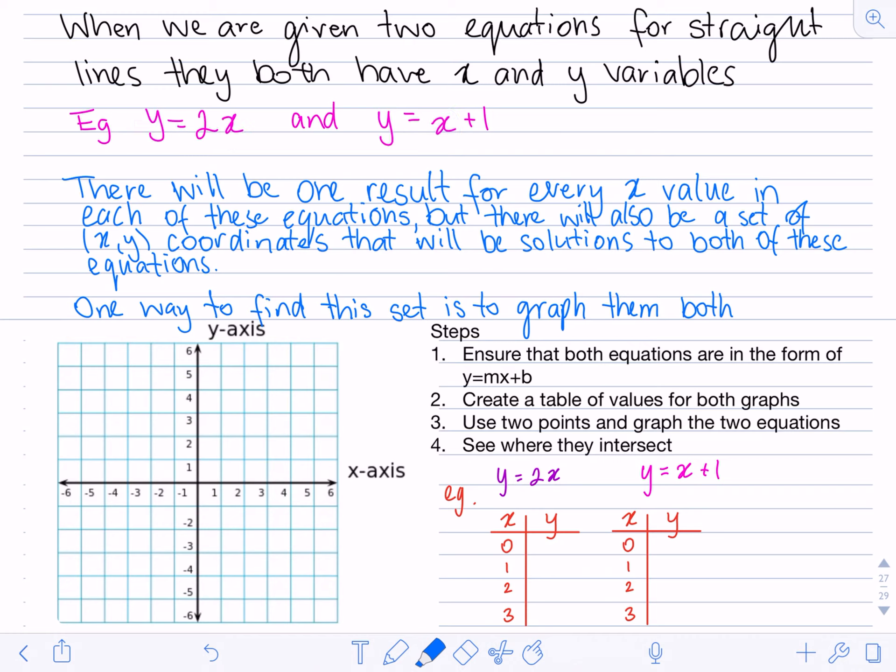Both of those x and y variables will have something different. For example, if I look at the first one and I make x equal to 2, then y is going to equal 4 because 2 times 2 equals 4. So each x value will have a different y value in each of these equations.